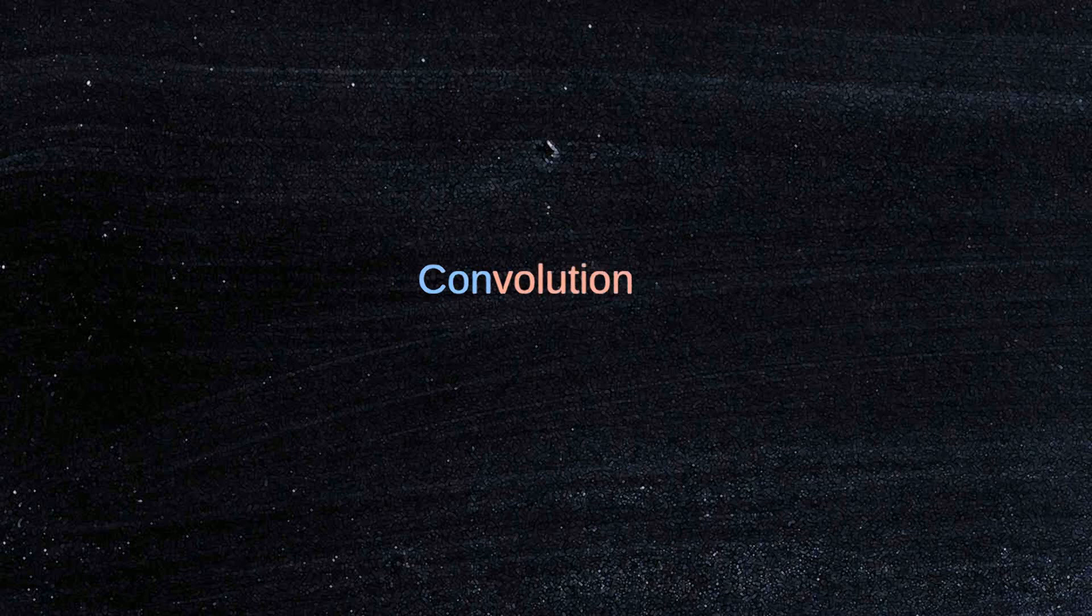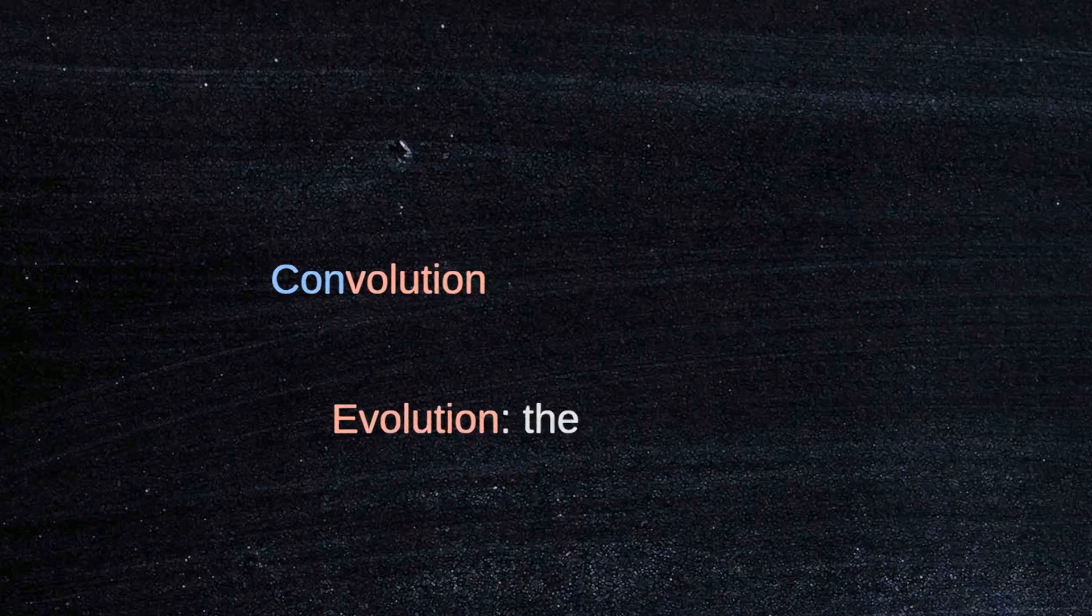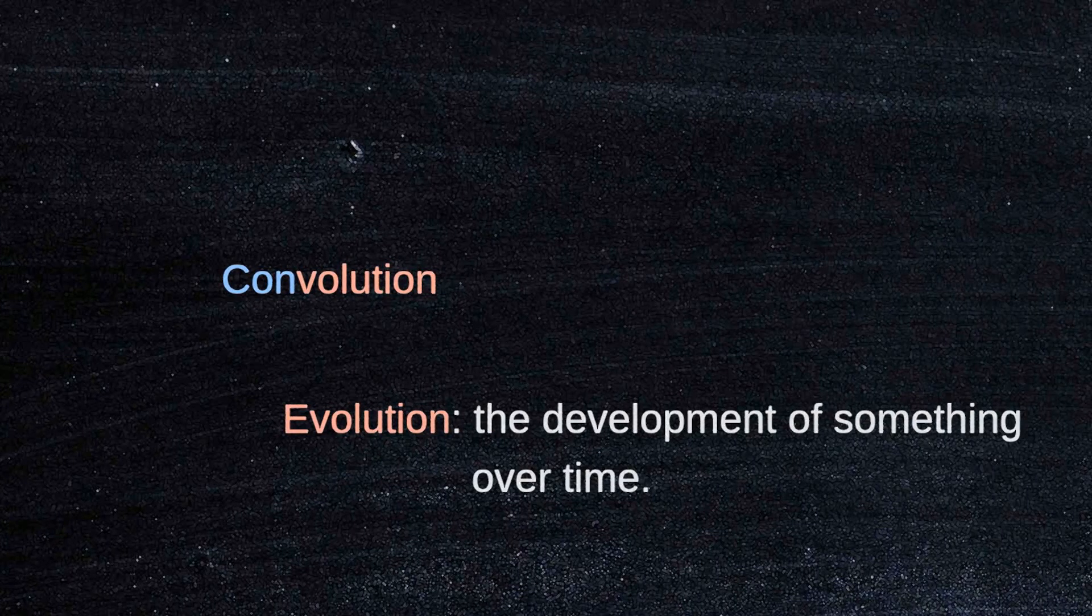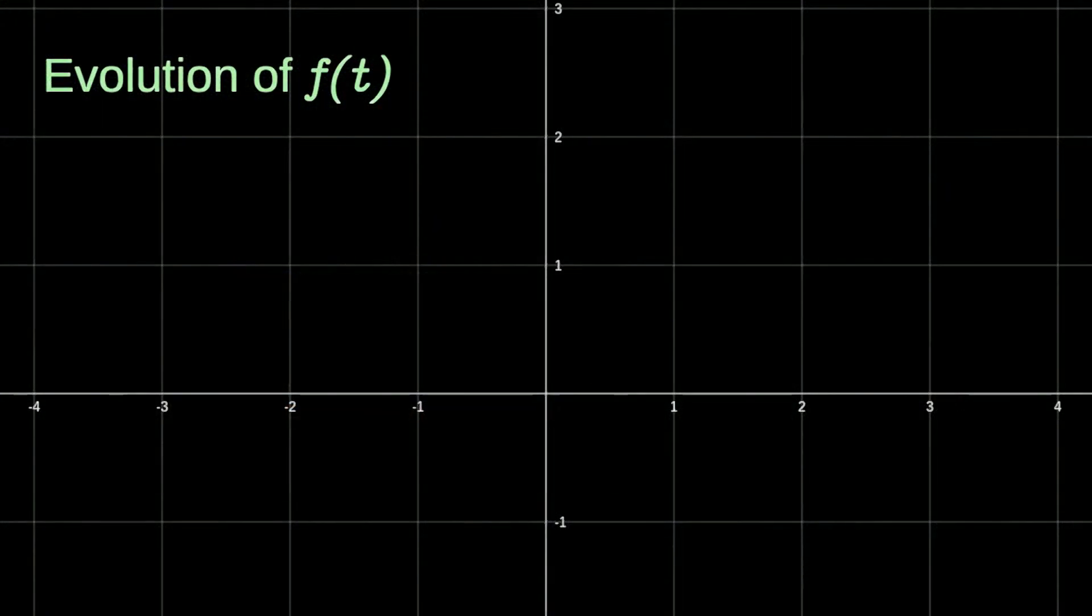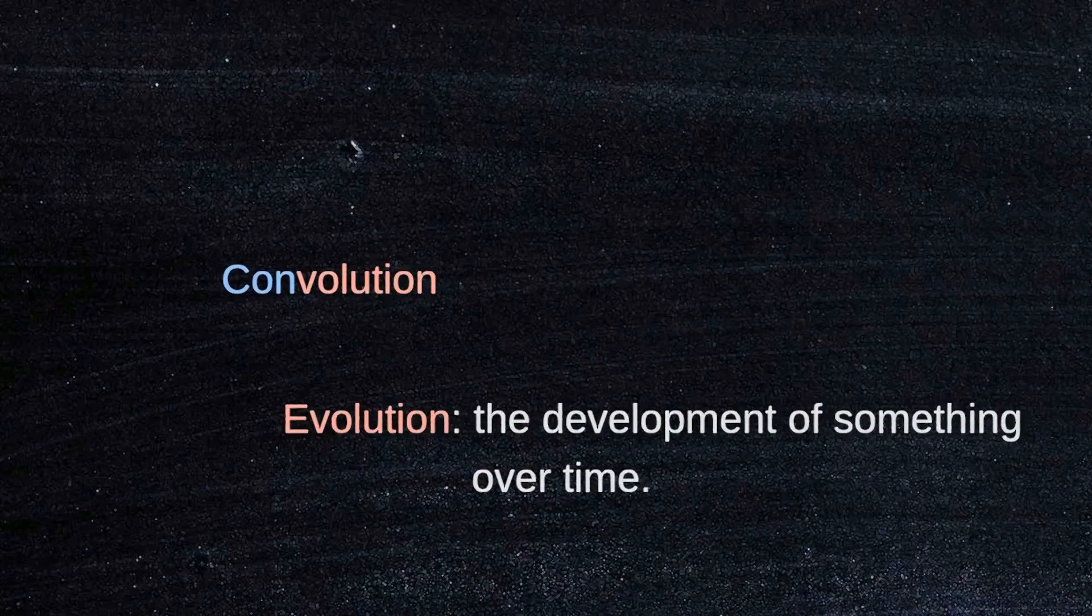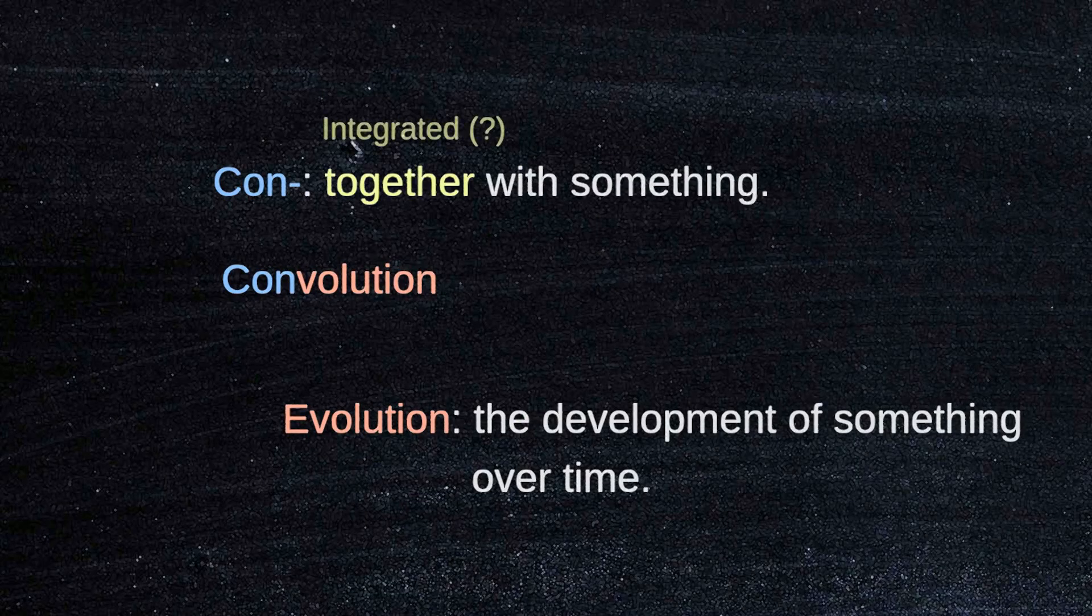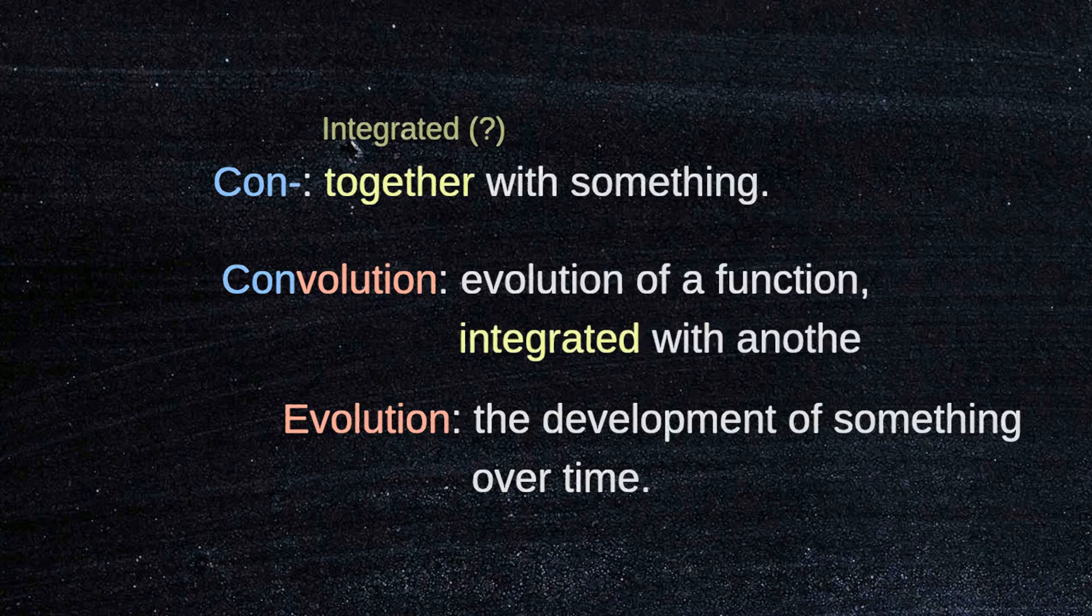If we analyze the word convolution, we will realize that it is similar to the word evolution. We can define evolution as the development of something over time. So if we have a function f of t, we could say the function evolves as t increases. Based on this idea, we can define convolution as the evolution of a function integrated with another function.